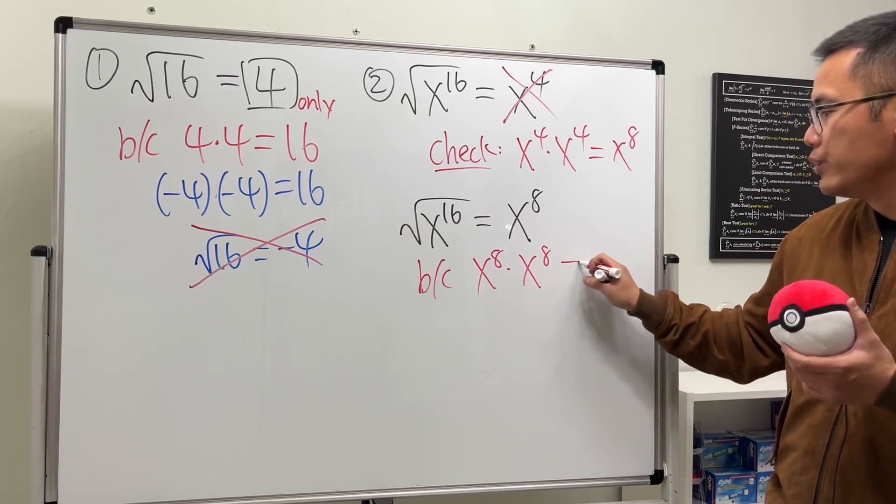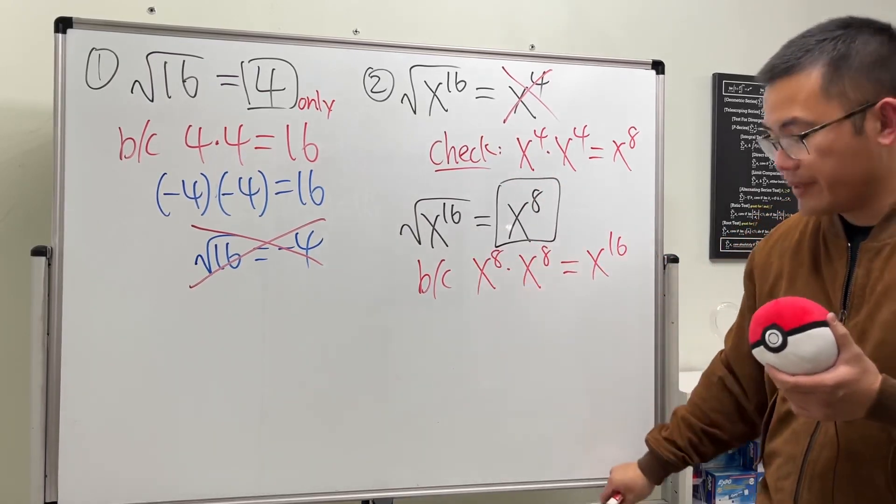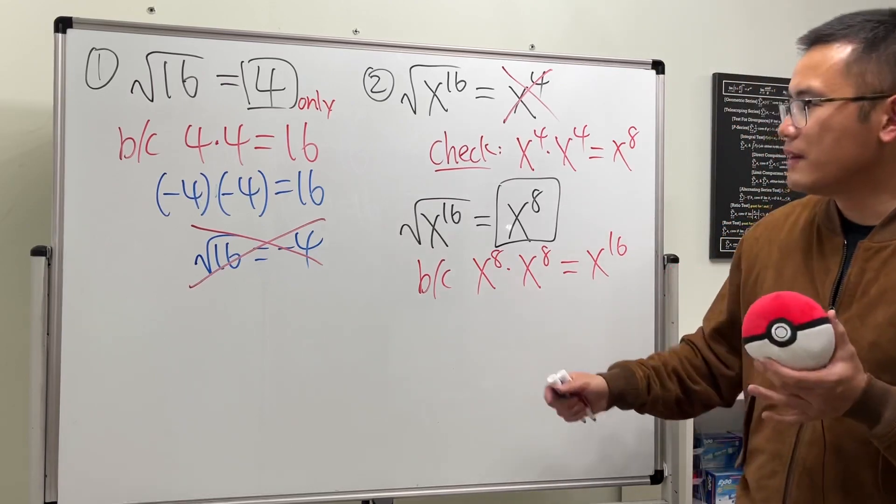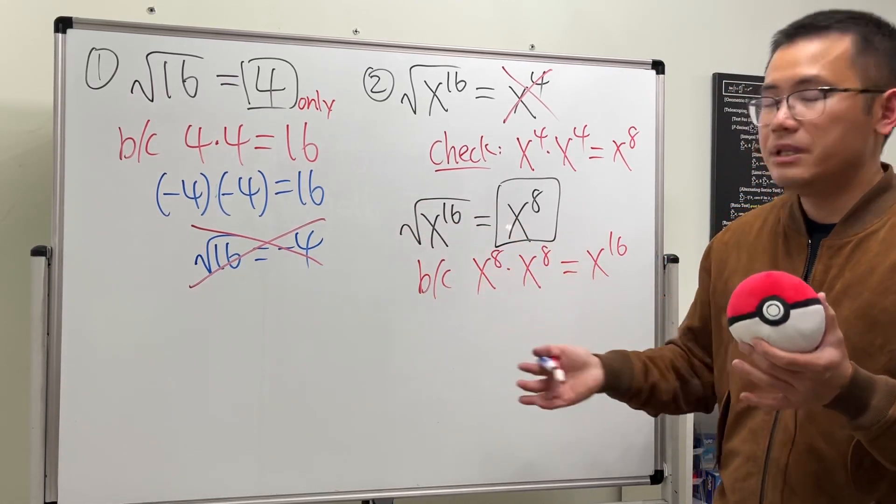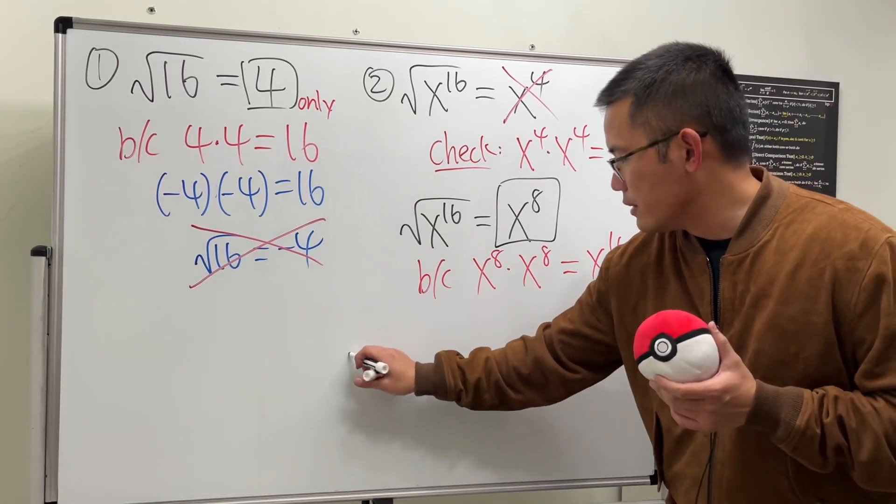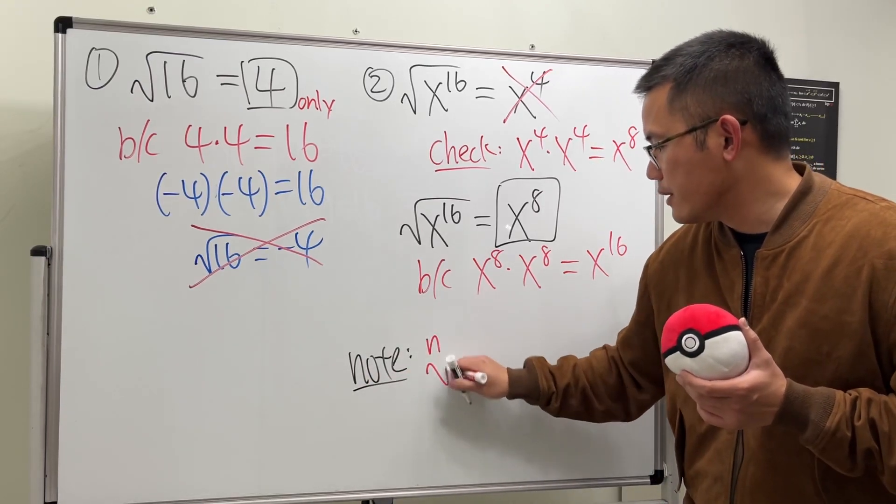So this right here is the answer. In general, this is how we simplify when we have any radical and also some power inside. Let me give you guys the complete version for this. If we have the following: nth root, and we have the x inside and we have some m's power like this...